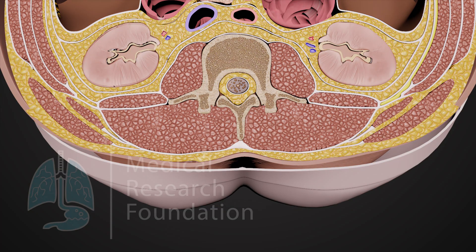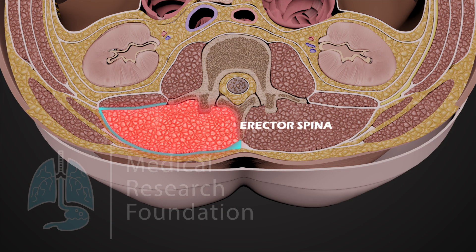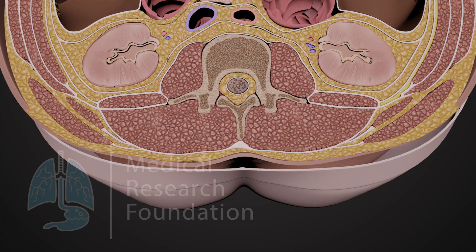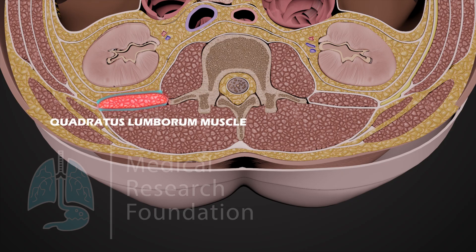Between the posterior and middle layers lies the erector spinae. Between the middle and anterior layers lies the quadratus lumborum muscle.